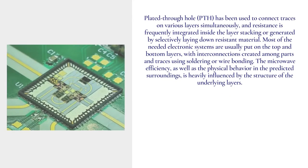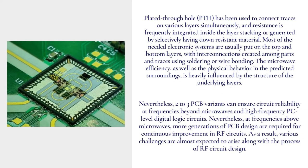Plated through hole, PTH, has been used to connect traces on various layers simultaneously, and resistance is frequently integrated inside the layer stacking or generated by selectively laying down resistant material. Most of the needed electronic systems are usually put on the top and bottom layers, with interconnections created among parts and traces using soldering or wire bonding. The microwave efficiency, as well as the physical behavior in the predicted surroundings, is heavily influenced by the structure of the underlying layers.